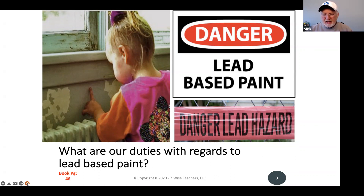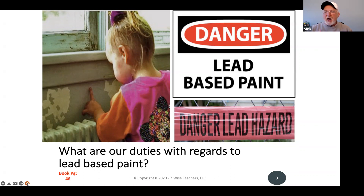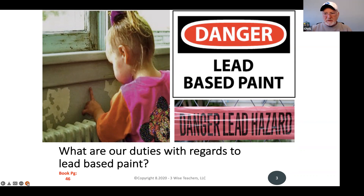What are our duties with regards to lead-based paint? If I'm the listing agent and the house was built before 1978, I'm obligated to let the seller know of his obligation to disclose whether he is aware of the presence of lead-based paint. If I'm working with the buyer, it would be my obligation to make sure the buyer is aware they have a right to receive that statement from the seller. Those are the agent's duties — let me now address the seller's duties specifically.